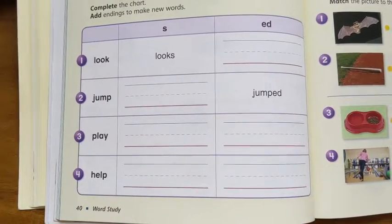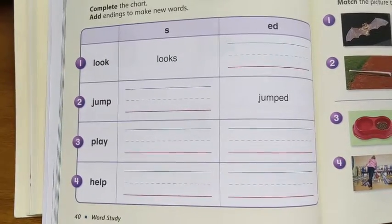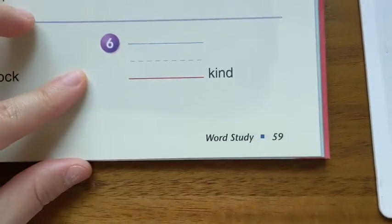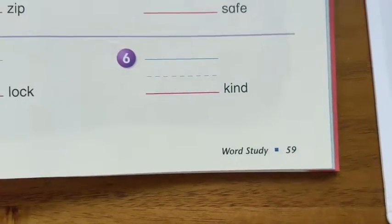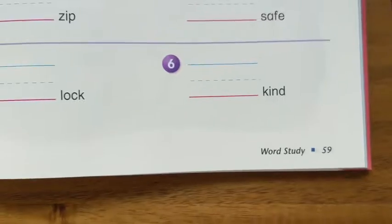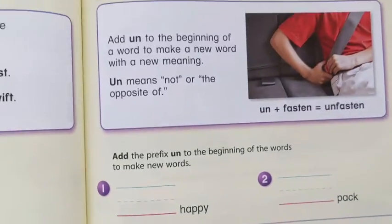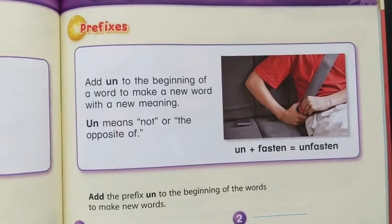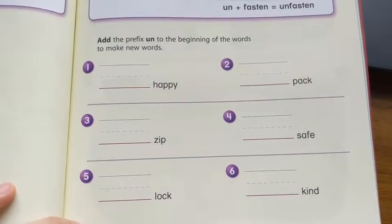When you are finished with this page, page 40, turn your page to page 59. So you're going to skip a bunch of pages, and when you get to 59, you will see prefixes.